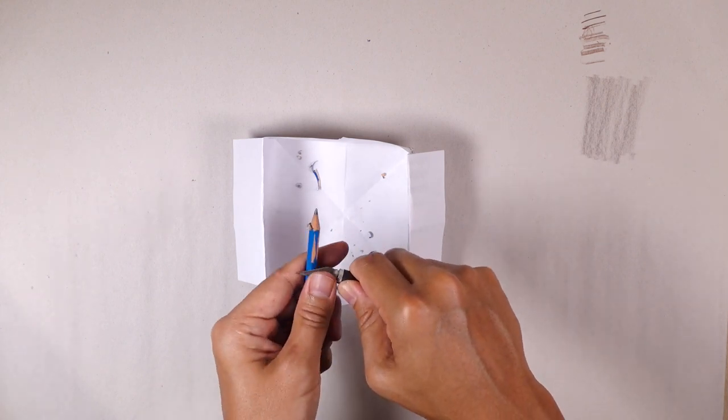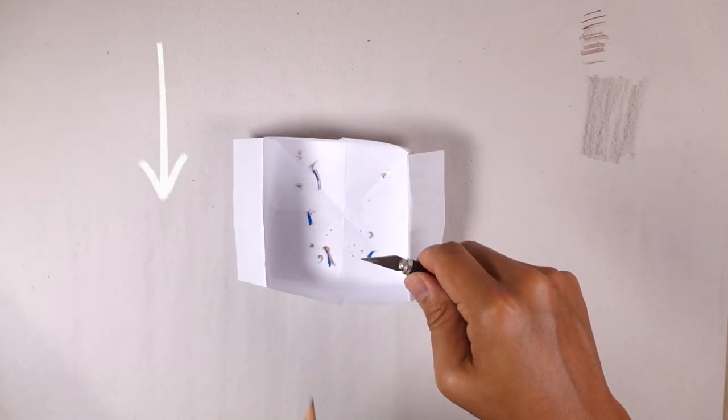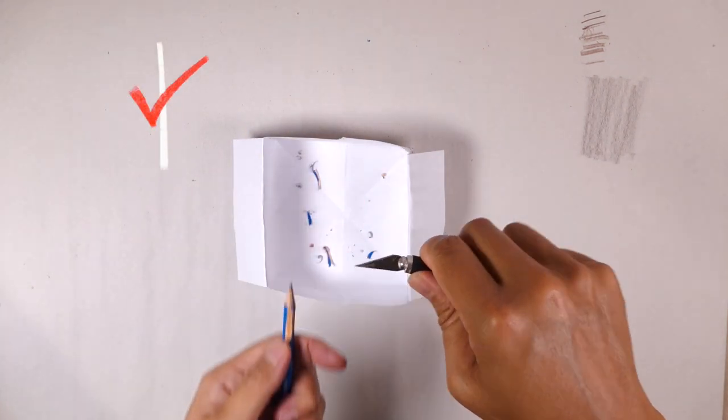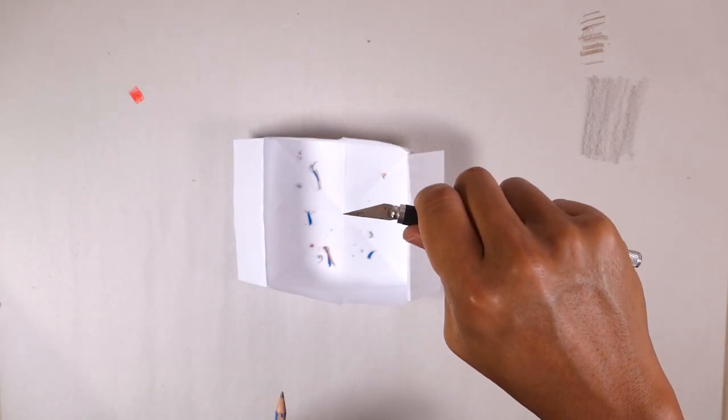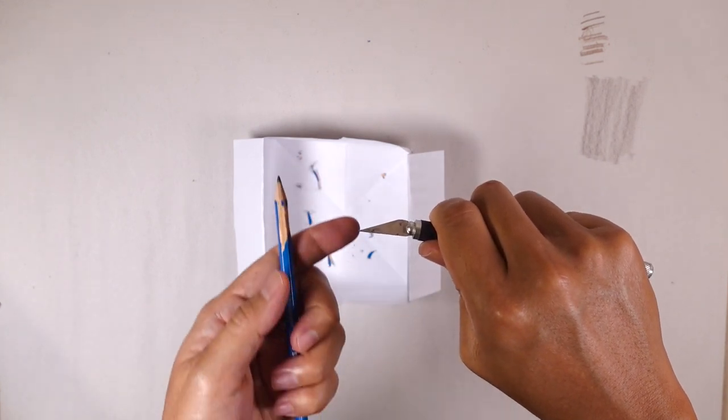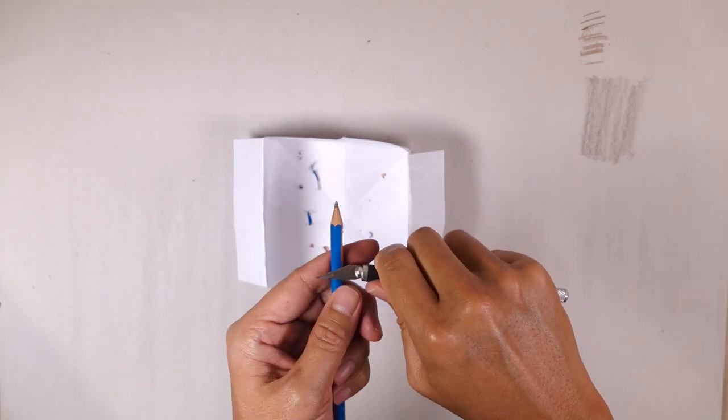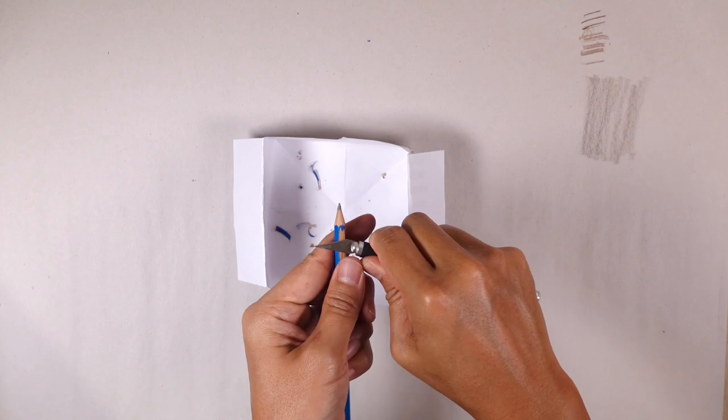And I'm pulling the pencil back. This stays stationary and I pull the pencil back. That way I have more control of what I'm doing.